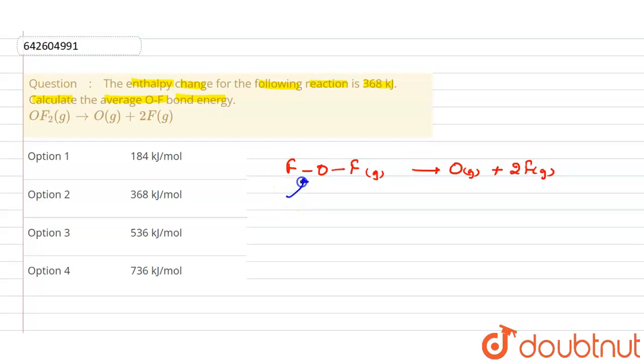To break one OF bond is x, so total two bonds are breaking. That means how much enthalpy will be changed? How much enthalpy is required to break these molecules? We have two bonds, so it will require twice of x.